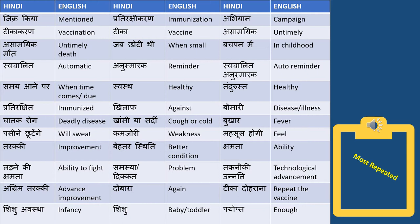'Bachpan mein' means in childhood — bachpan is childhood. For example: 'Bachpan mein humne unko tika karan kiya tha' — we got them vaccinated in childhood. 'Swachalit' means automatic. 'Anusmarak' means reminder. 'Swachalit anusmarak' means auto reminder. Kai baar dialogues mein aata hai ki the Australian healthcare department will send an auto reminder whenever your child is due for immunization.